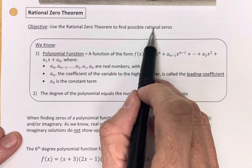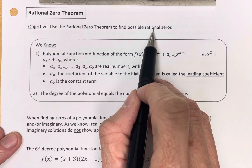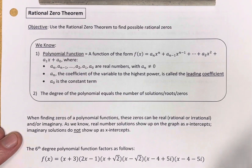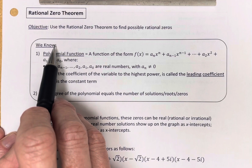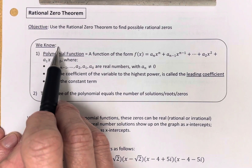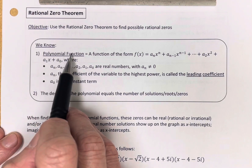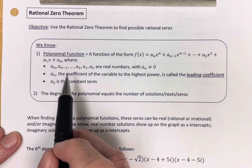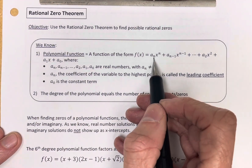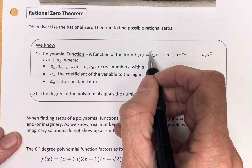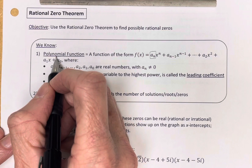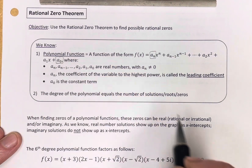Let's remind ourselves that rational numbers are any numbers that can be written as a fraction. What do we know that we're going to need for this lesson? We need to know what a polynomial function is — in particular, we want to notice the leading coefficient and the constant term.